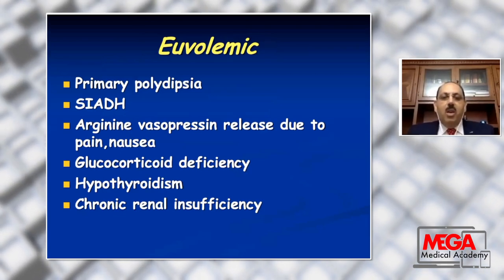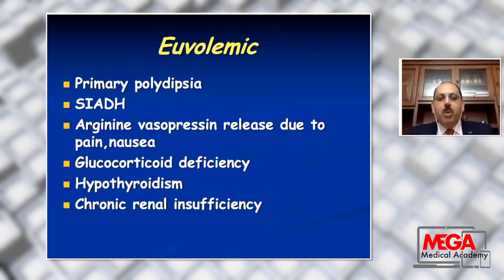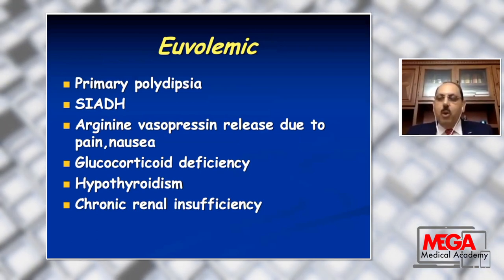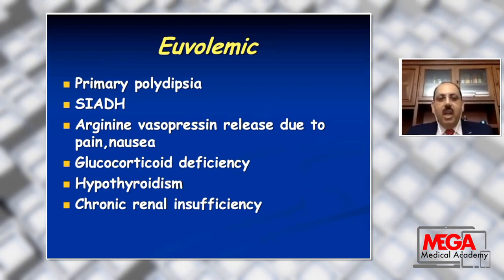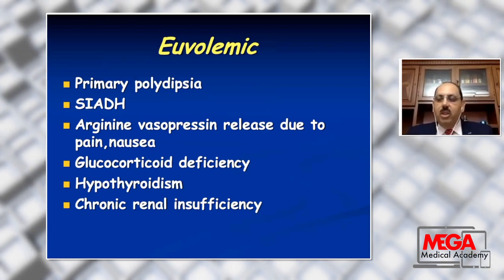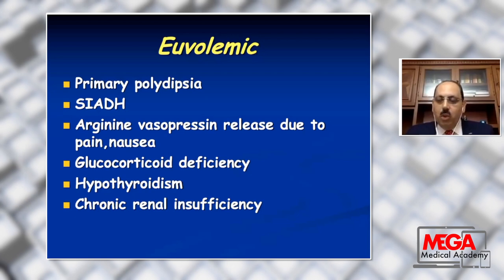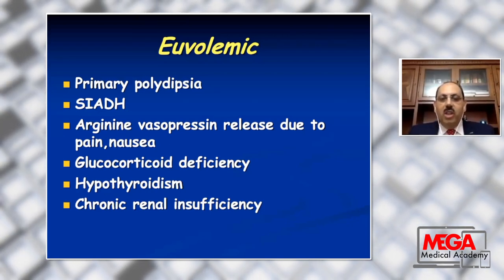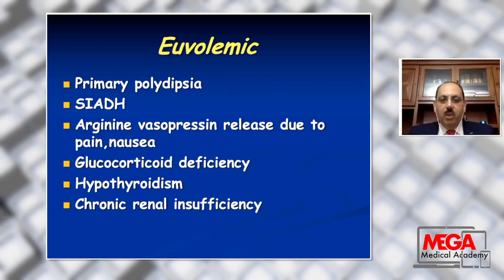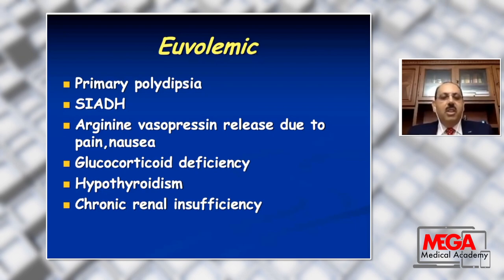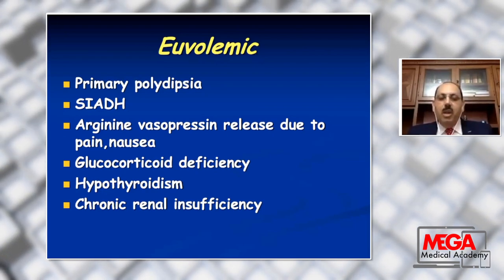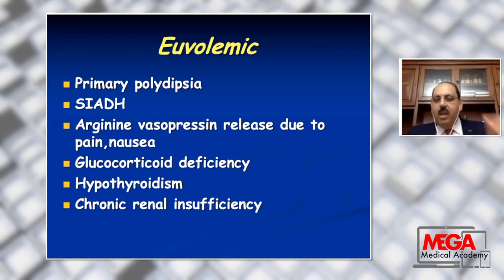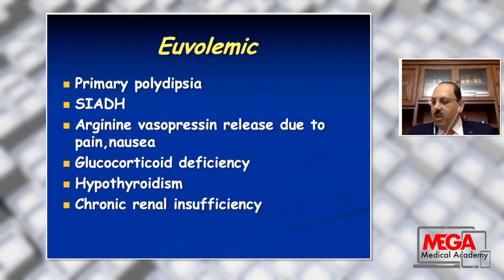In euvolemic hyponatremia, in cases of primary or psychogenic polydipsia, syndrome of inappropriate antidiuretic hormone where inappropriate release of ADH results in water retention, volume overload which stimulates heart receptors to release ANP and BNP and decrease the renin-angiotensin system, decrease aldosterone secretion, sodium not reabsorbed by the kidney, and natriuresis or increased sodium losses in the urine. Also, arginine vasopressin released due to pain and nausea, glucocorticoid deficiency, adrenal insufficiency, or hypothyroidism. Also, chronic renal insufficiency where urinary sodium is increased.